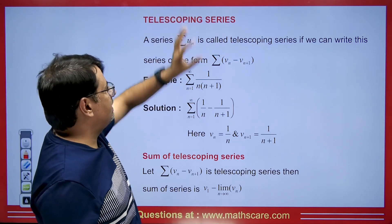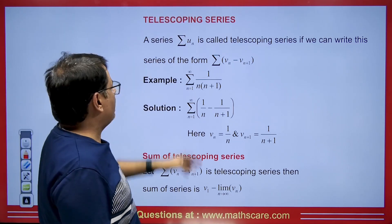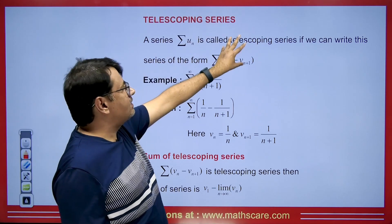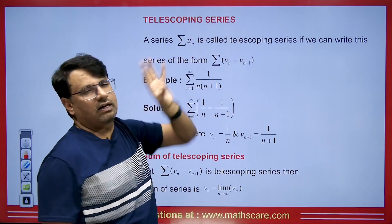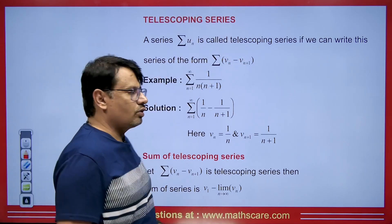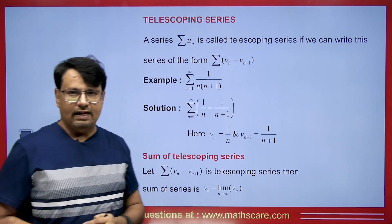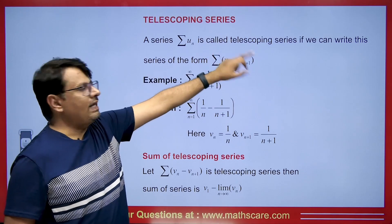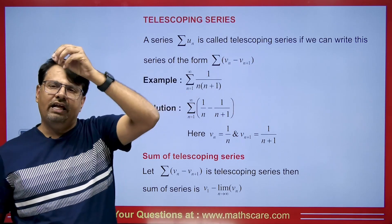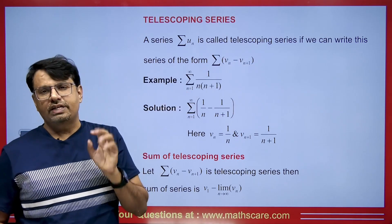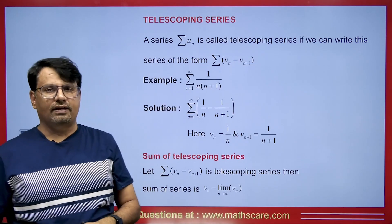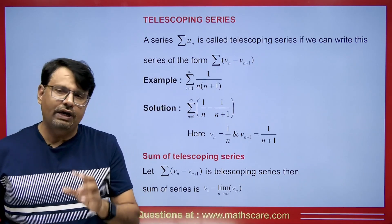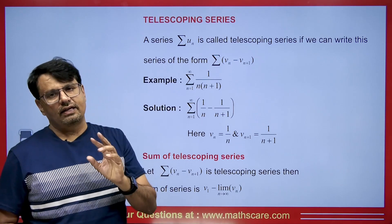So students, if we have any infinite series and if we can represent this infinite series such that the nth term minus the (n+1)th term — if we can write it in this form — then this is what we call a telescoping series.